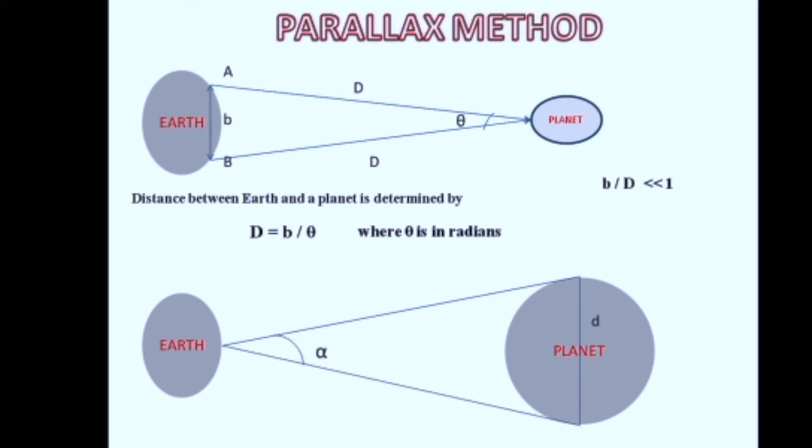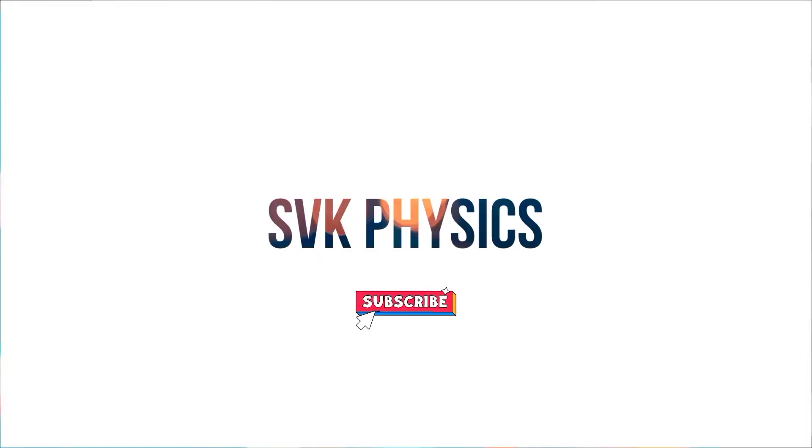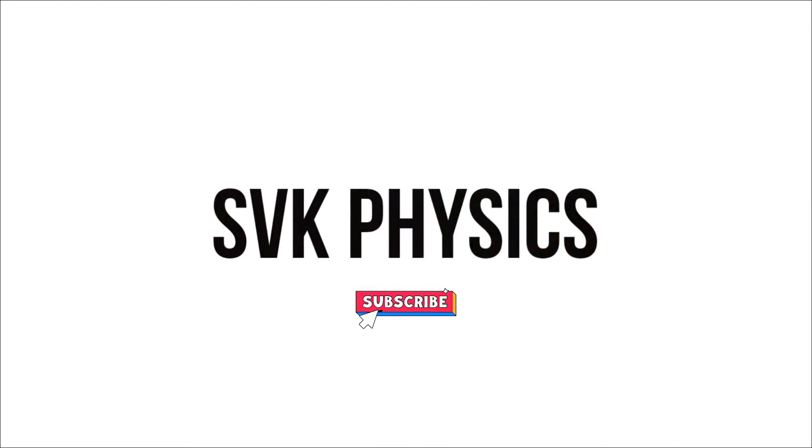Alpha is the angle made at Earth's surface. Since we already know capital D, if you know the value of alpha and capital D, small d can be easily found from the formula α = d/D.